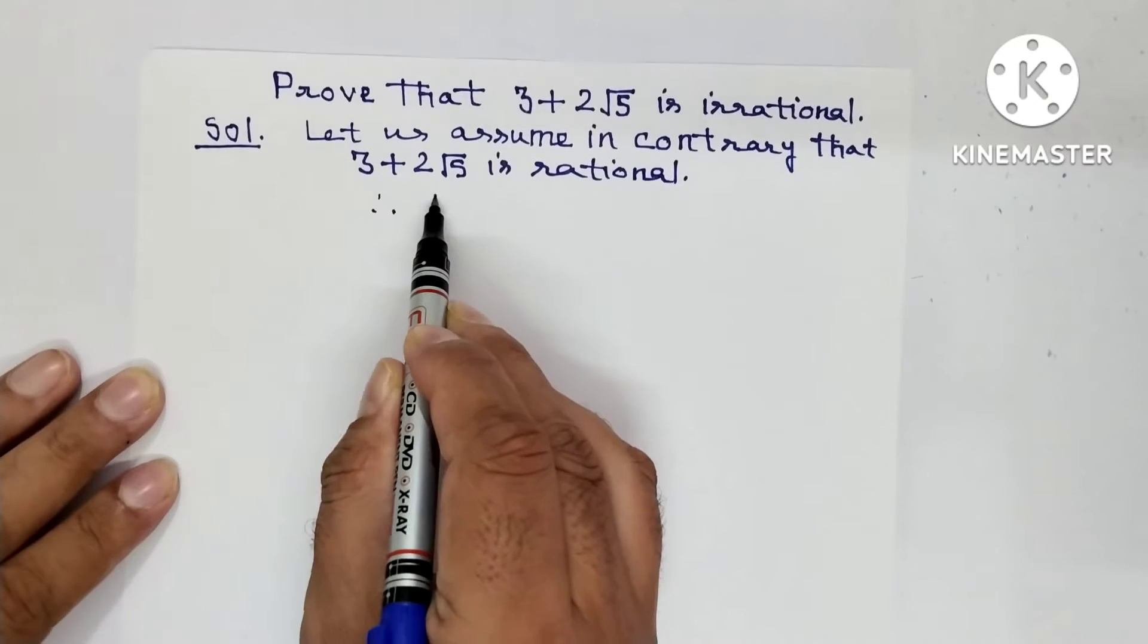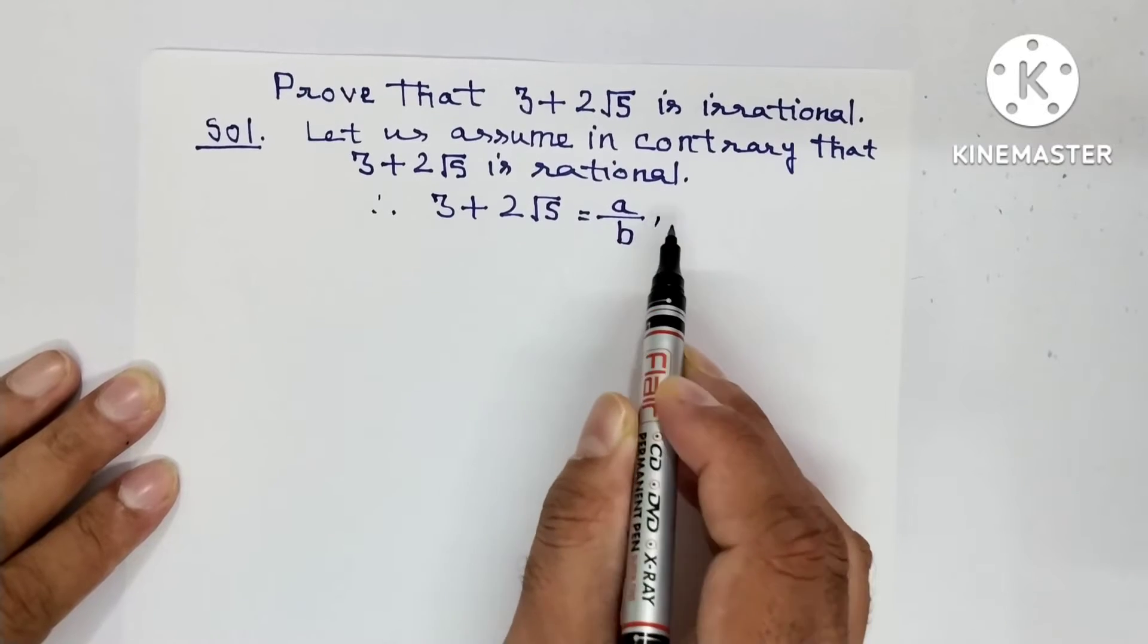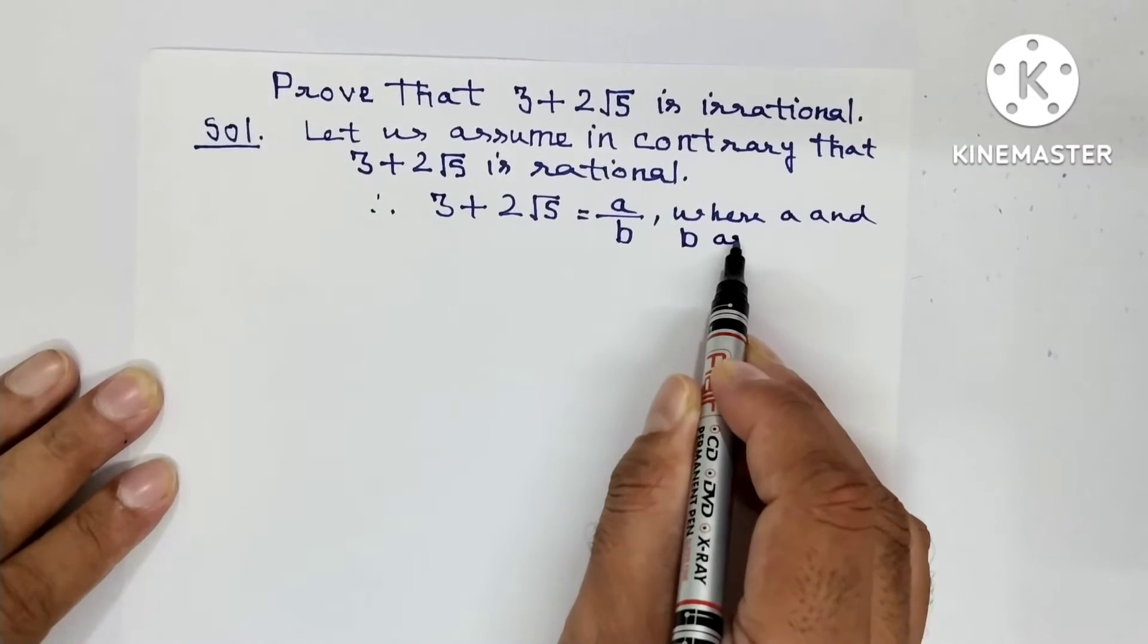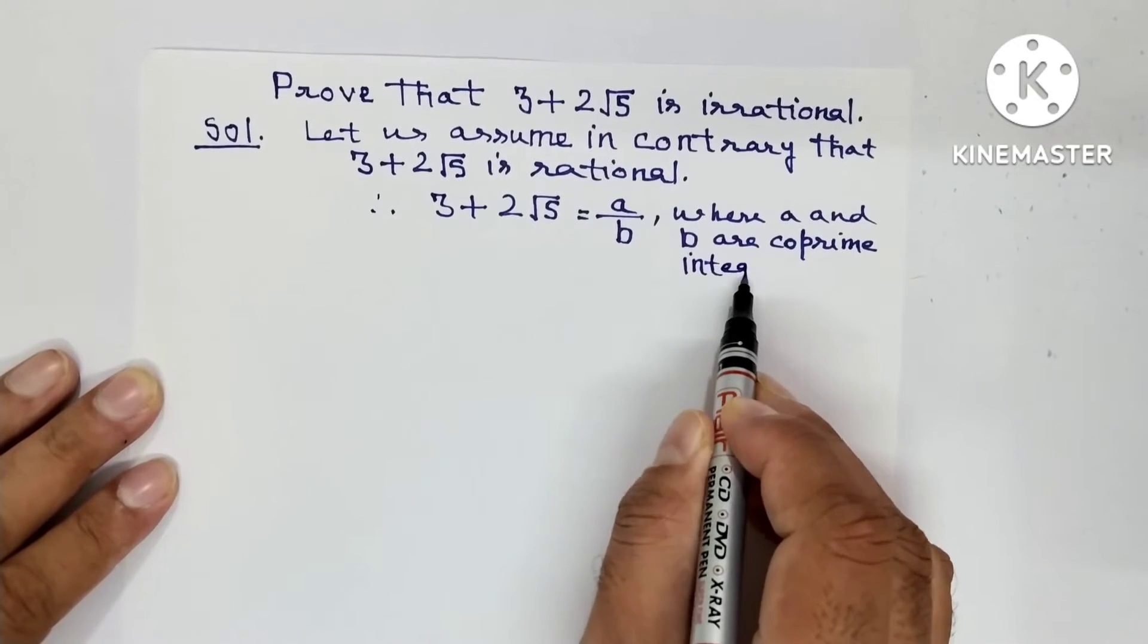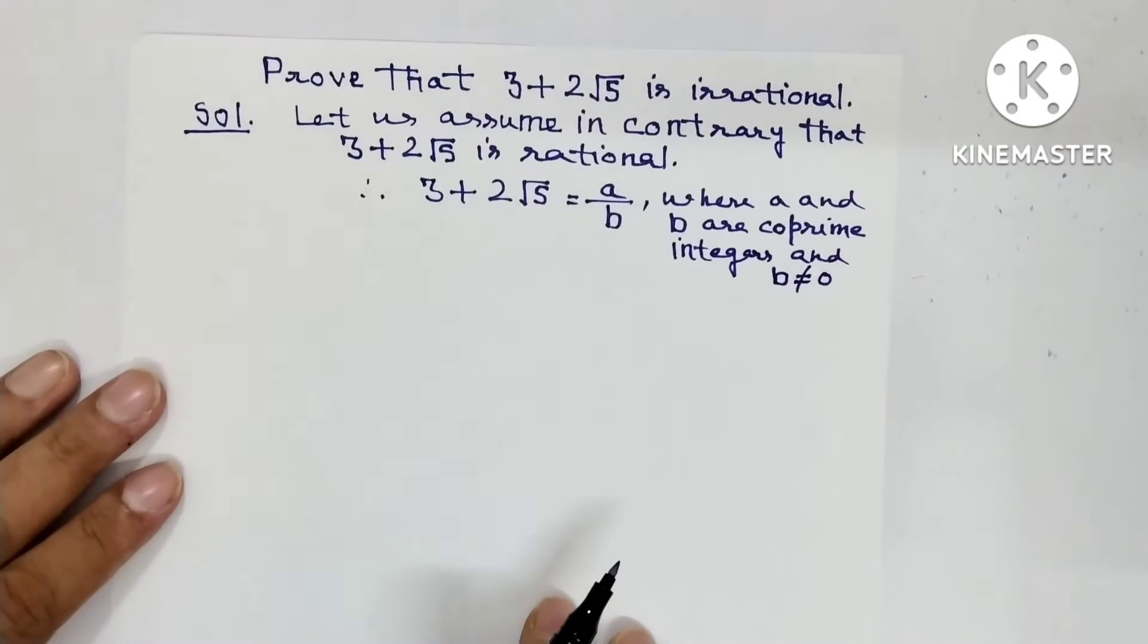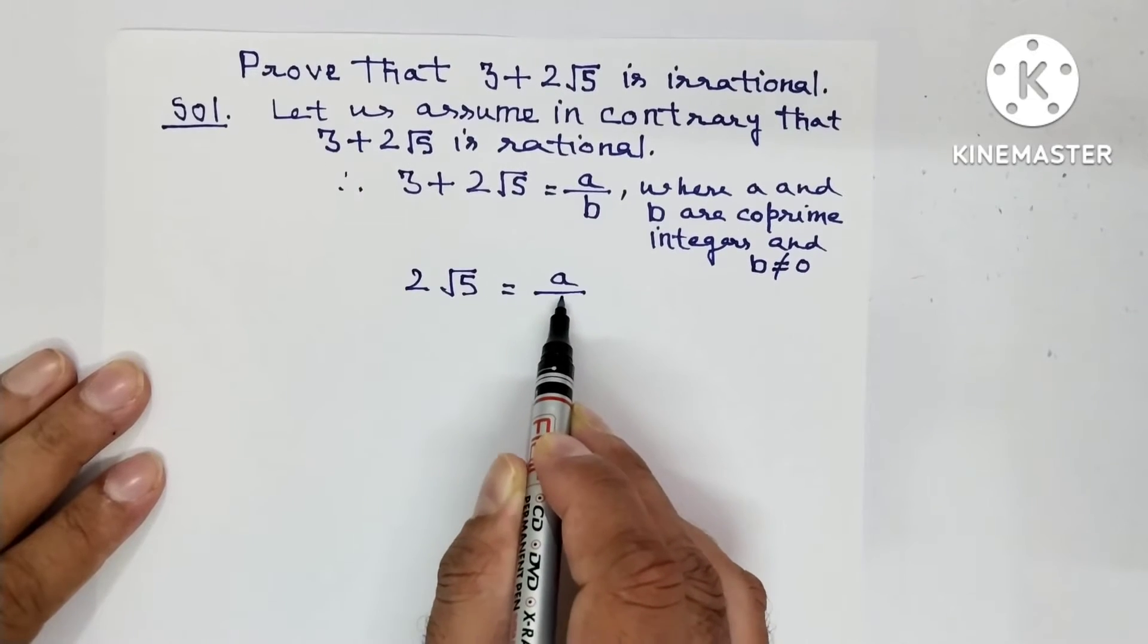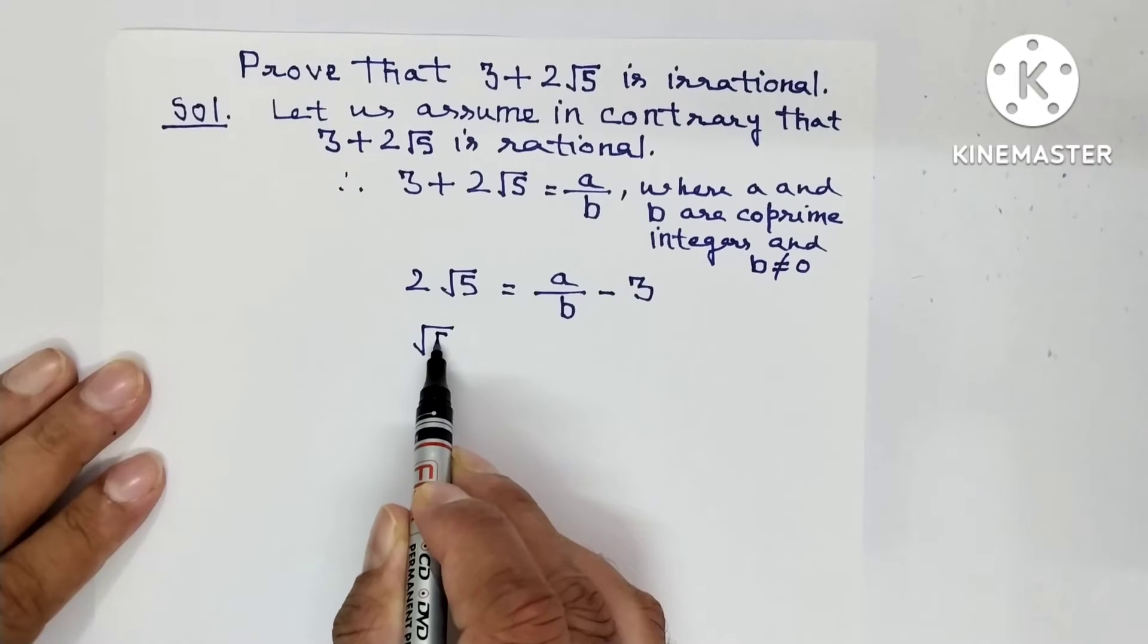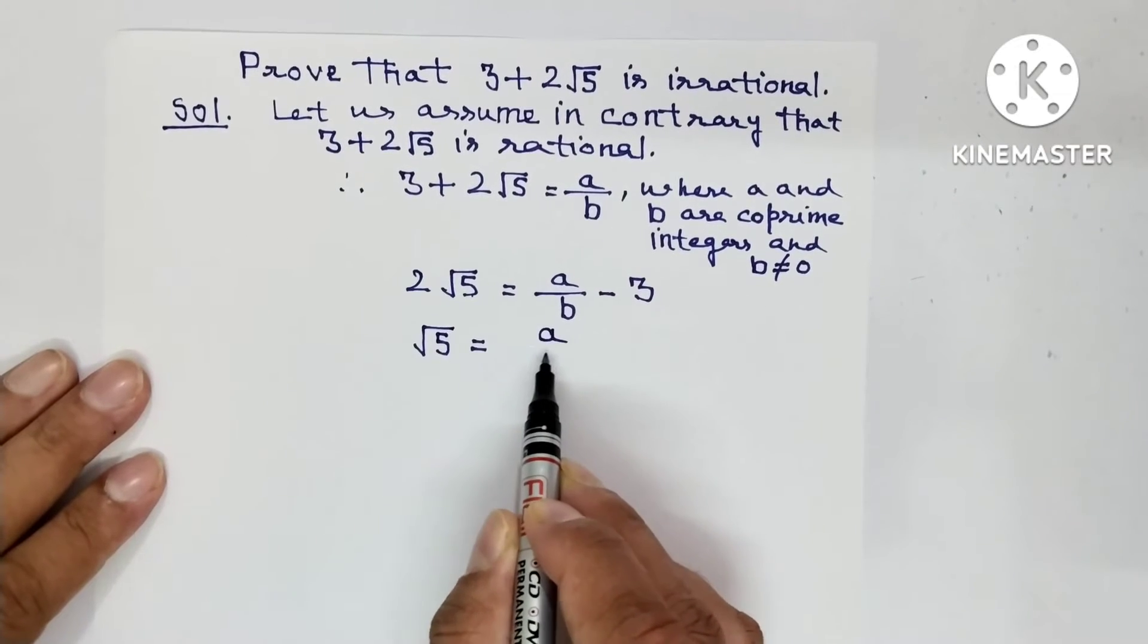Therefore, 3 plus 2 under root 5 will be equal to A upon B, where A and B are coprime integers and B is not equal to 0.